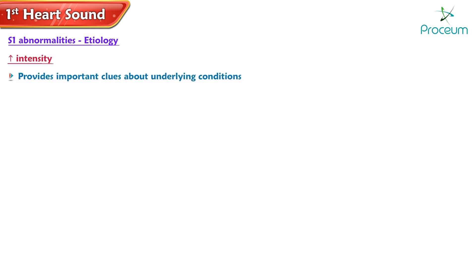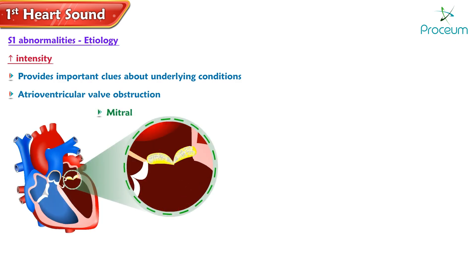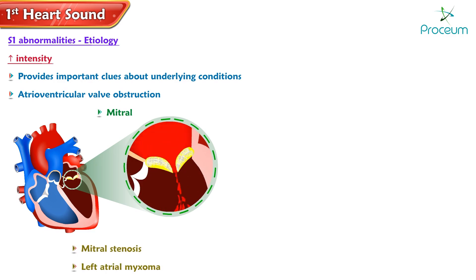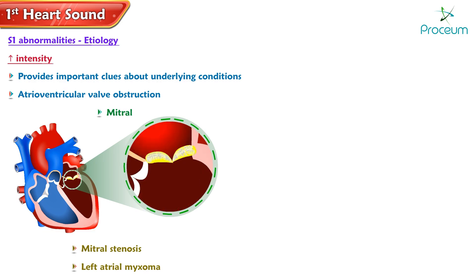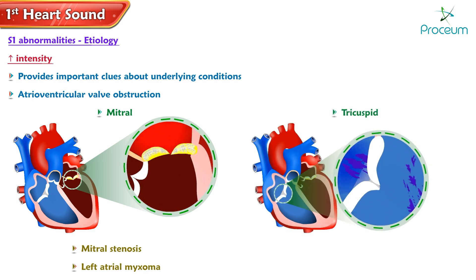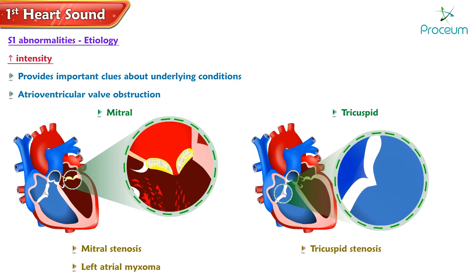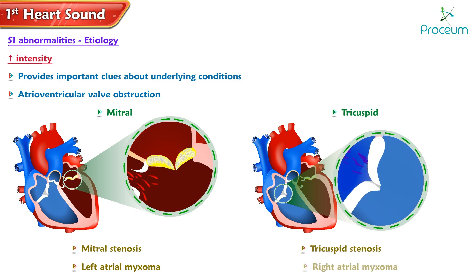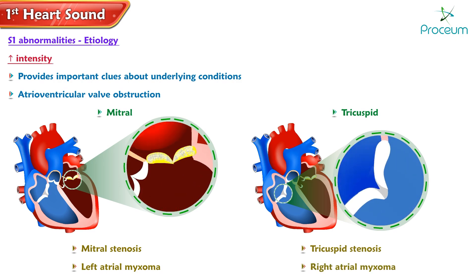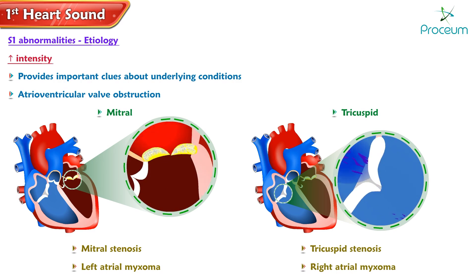Abnormalities causing an increased intensity of S1 can provide important clues about underlying cardiovascular conditions. Atrioventricular valve obstruction from mitral valve conditions like mitral stenosis and left atrial myxoma can lead to an augmented S1. Tricuspid valve abnormalities such as tricuspid stenosis and right atrial myxoma can also cause an increased intensity of S1.